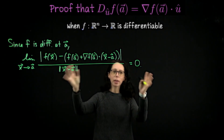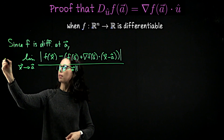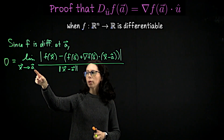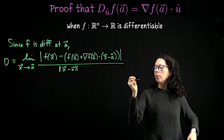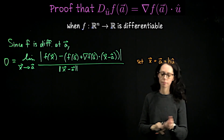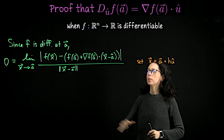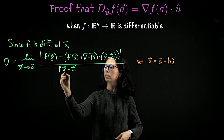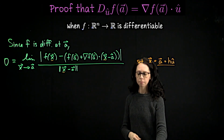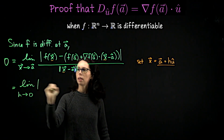We already know our function is differentiable, so I know this limit is zero. I'm trying to compute a directional derivative, so let me take this zero and slide it to the left — zero equals this limit. Now, instead of approaching a randomly, let's approach a through the direction indicated by the unit vector u. I'm going to set x equal to a plus a little step h in the direction of u. As x goes to a, that's equivalent to h going to zero. So everywhere I have x, I'll replace it with this new expression, and letting x go to a is letting h go to zero.